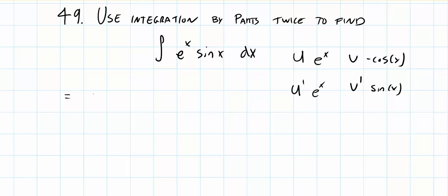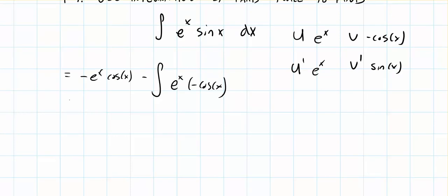This is equal to u times v, or negative e to the x cosine x, minus the integral of u prime times v, or e to the x times negative cosine of x. We bring that negative out and rewrite this as negative e to the x cosine x plus the integral of e to the x cosine x.